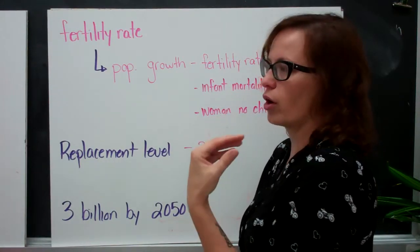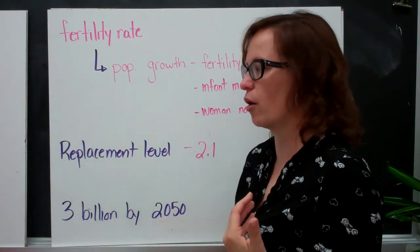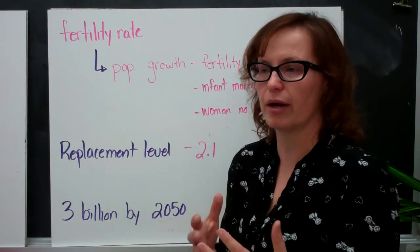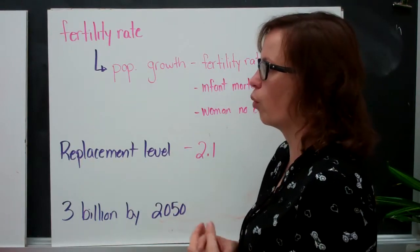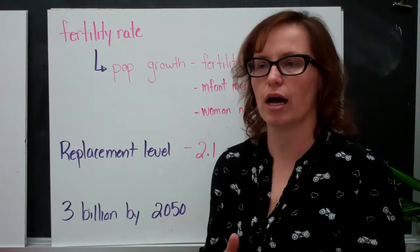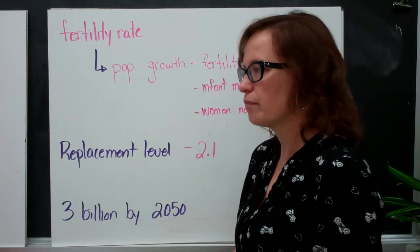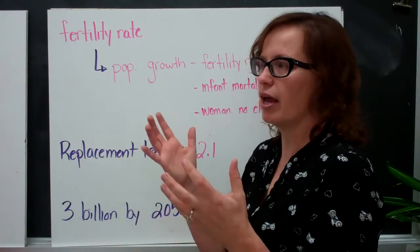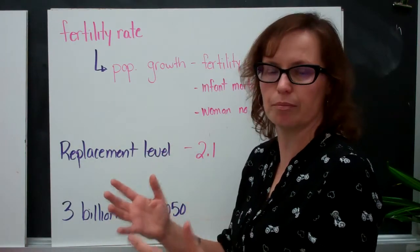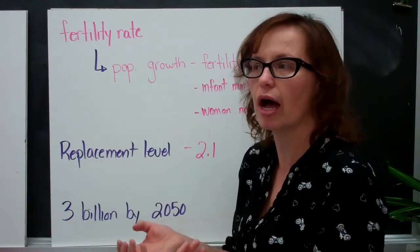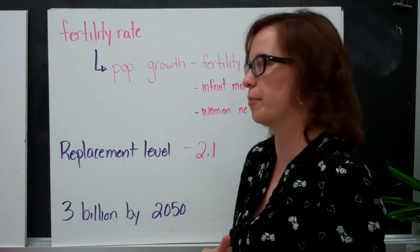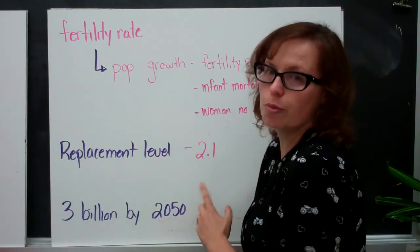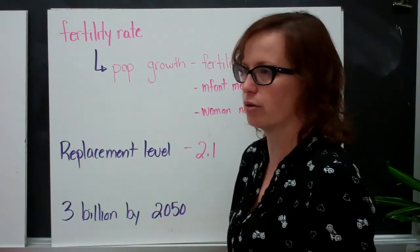Now for governments, you want to think about your population replacement. And so if we think about it, Canada has a fertility rate of 1.5 children per family. So it takes two people to make a baby. And if we only have 1.5 children being born for every two people, we're not replacing our population. So the goal for our replacement level would be 2.1 children per household.